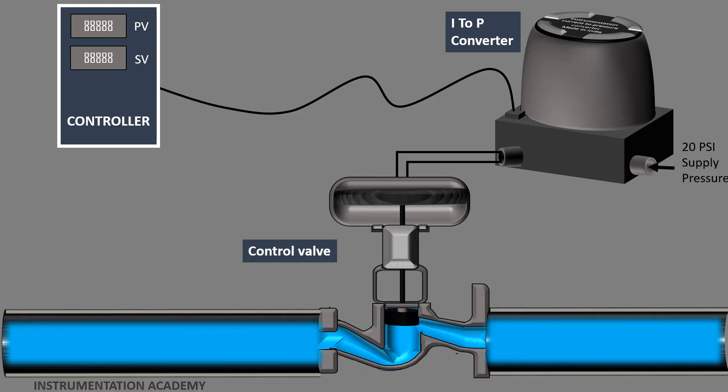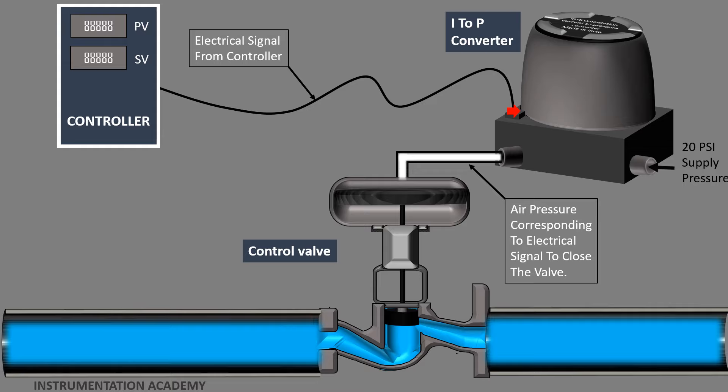When a controller decides to open or close a control valve, accordingly a signal of 4 to 20 milliampere is sent to the control valve. As pneumatic control valves operate only on pneumatic air pressure signal, an I2P converter is used to convert this electrical signal from the controller to proportional pneumatic signal. This pneumatic signal can be used to open or close the pneumatic control valve.